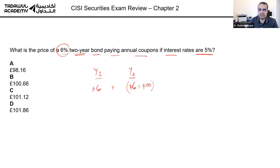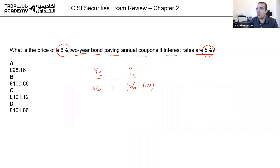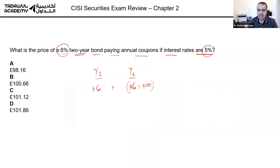You have to discount these cash flows by the discount rate of five percent. At this level, CISI level three will never give you a bond with a maturity of more than two years — it would take too long to calculate. So any bond CISI asks you to price in this qualification is going to be a two-year bond.